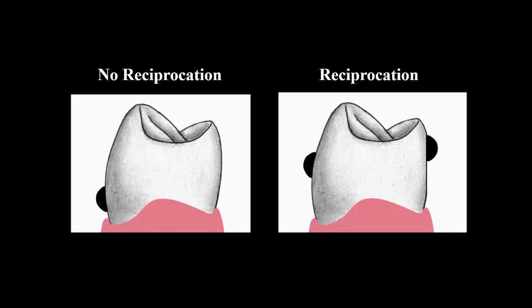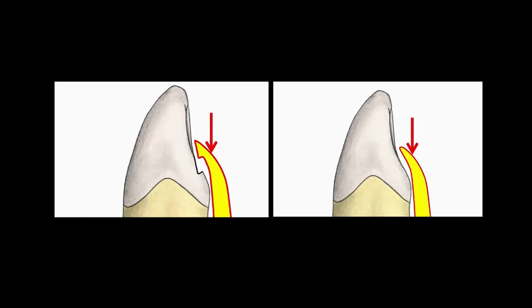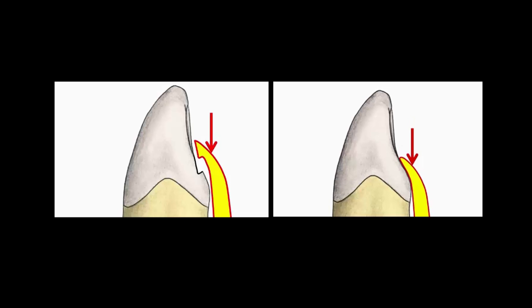Therefore, the facial clasp does not torque the tooth by tipping it lingually. And the benefit of having a positive rest seat on the facial surface is that it does not tip the tooth, as would occur if you had a rest just contacting a sloping lingual surface.